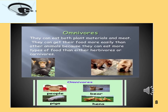The last category is omnivores — they can eat both plant materials and meat. They can get their food more easily than other animals because they can eat more types of food than either herbivores or carnivores. Examples of omnivores are people, bear, pig, hens and monkey.